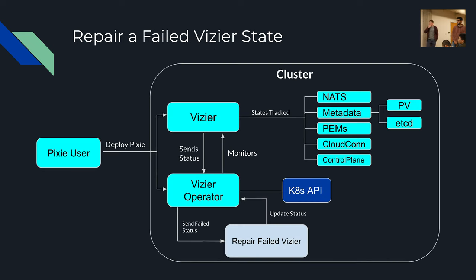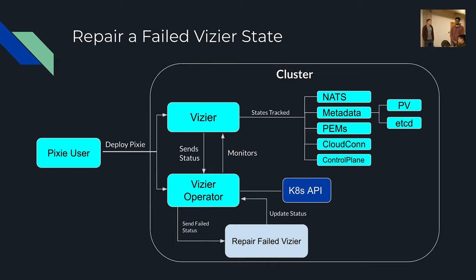This diagram shows how the new functionality plays in with all of these other systems. The main difference is that when the Vizier operator receives the status from Vizier, if that status is a failed state, it triggers this function to see whether or not the failed state is something it can repair. If it can repair it, it'll repair it, update the status, send it back to the operator, and hopefully the cluster would stay alive.